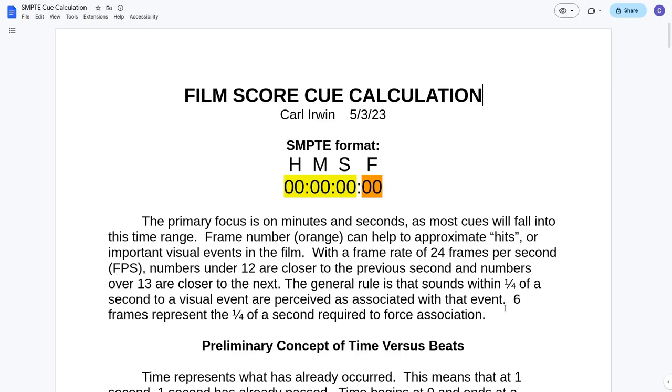The general rule is that sounds within one quarter of a second to a visual event are perceived as associated with that event. It's a psychological truth. If something happens within a quarter of a second, about 0.25 seconds, that sound will be associated with the event that it is within that range of. Six frames represent one quarter of a second required to force association at 24 frames per second.